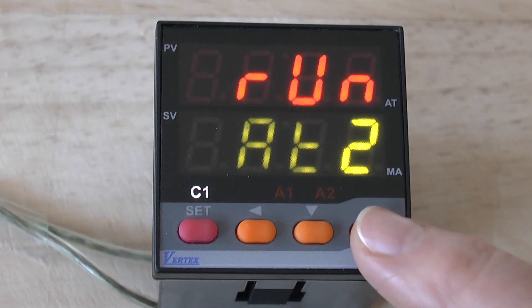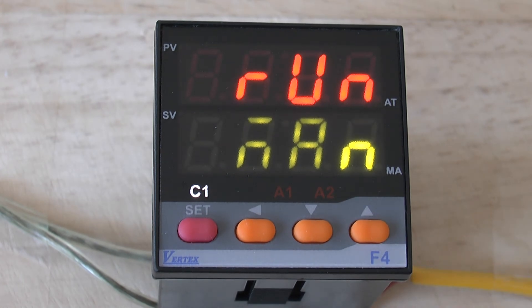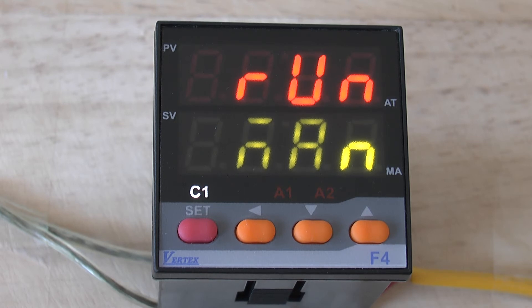The next parameter is the MAN or manual parameter. This is the parameter you would choose if you want to be able to force the output up and down from 0 to 100%. A word of caution.